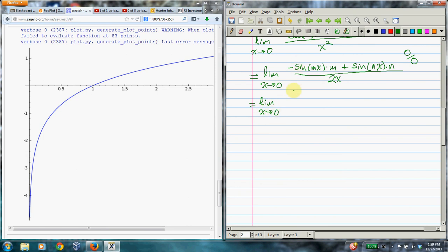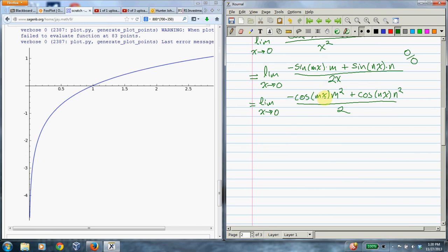Okay, so up here you get minus cosine m x m squared plus cosine n x times n squared. And down here you just get 2. Okay, and now let's check what's happening. So it's definitely not indeterminate anymore, because the bottom is not 0 or infinity, it's 2. And you can just plug in, you know, cosine of 0 is 1, so this is minus m squared plus n squared. So that's kind of neat. It turns out to be n squared minus m squared. So that's a pretty problem.